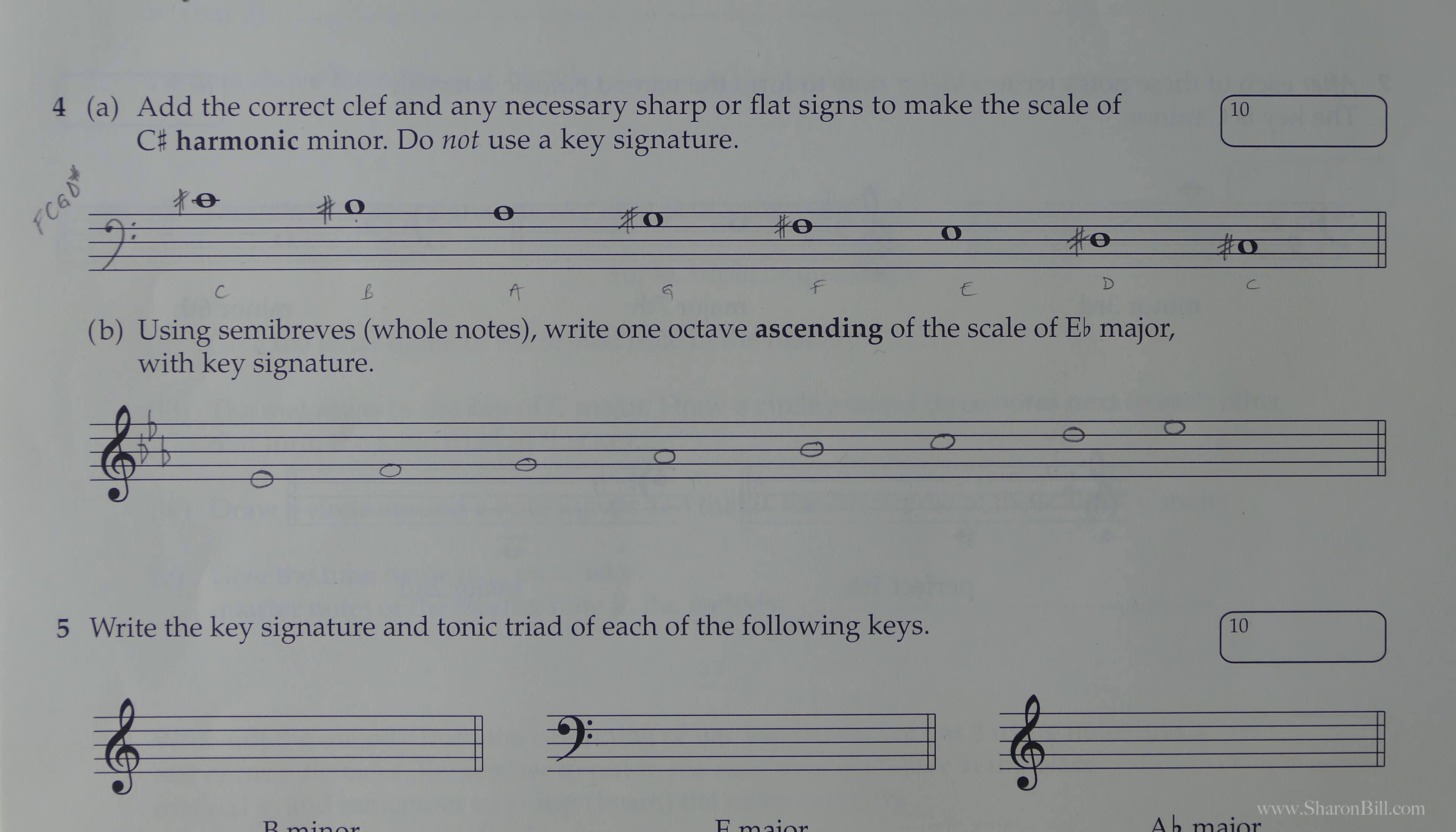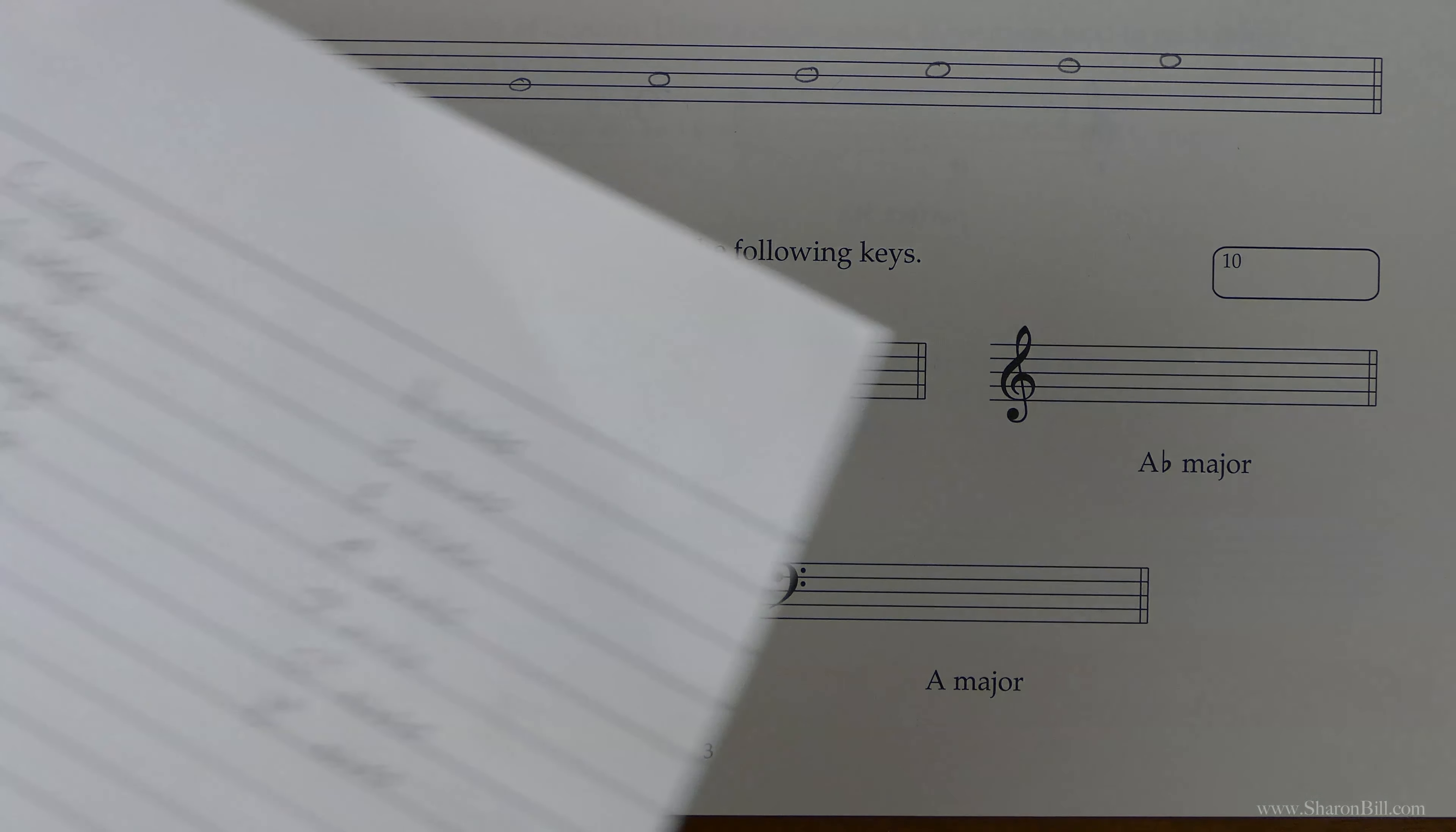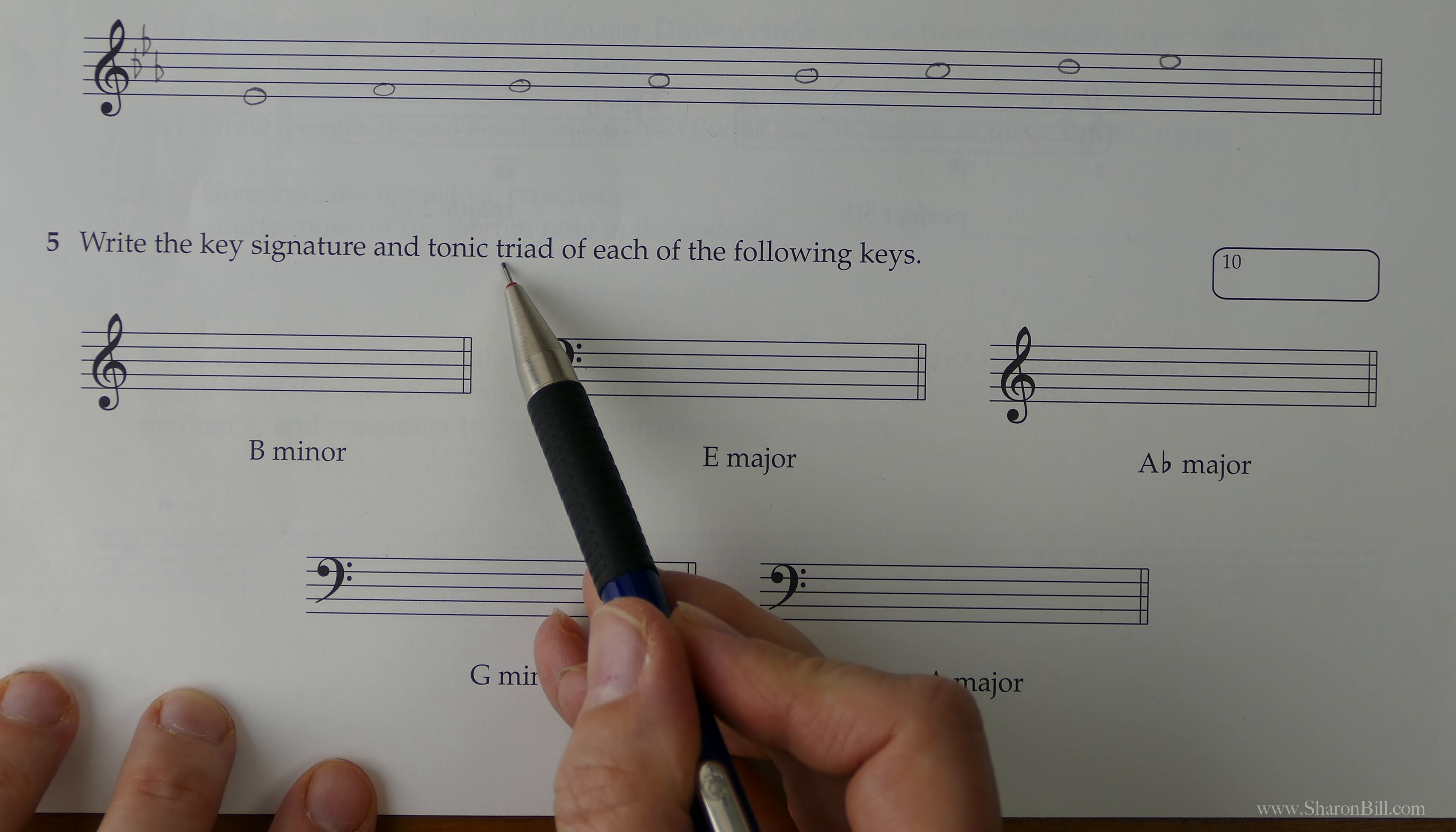So question 5, again, asks us to look at key signatures. We're looking at major and minor key signatures. So yet again, if you've done your circle of fifths, quickly write that down. It's worth a few minutes before you start any exam paper. Then you've done all of that thinking straight away. It's really, really valuable skill to just practice whipping down all of those scales in a list.